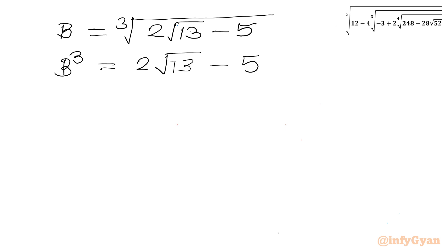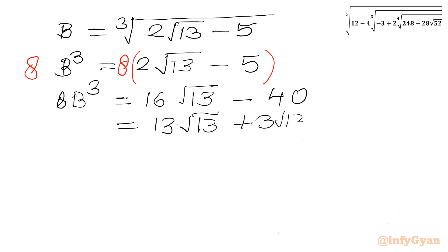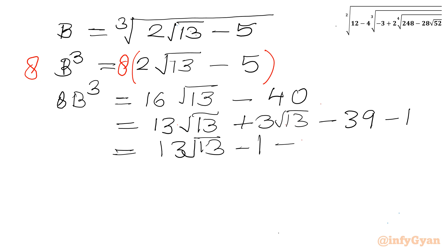Now I will multiply both sides by 8, so the left-hand side becomes 8B³, and the right-hand side becomes 16√13 − 40. I can split 16√13 as 13√13 + 3√13, and write −40 as −39 − 1. Rearranging: 13√13 − 1 − 39 + 3√13.